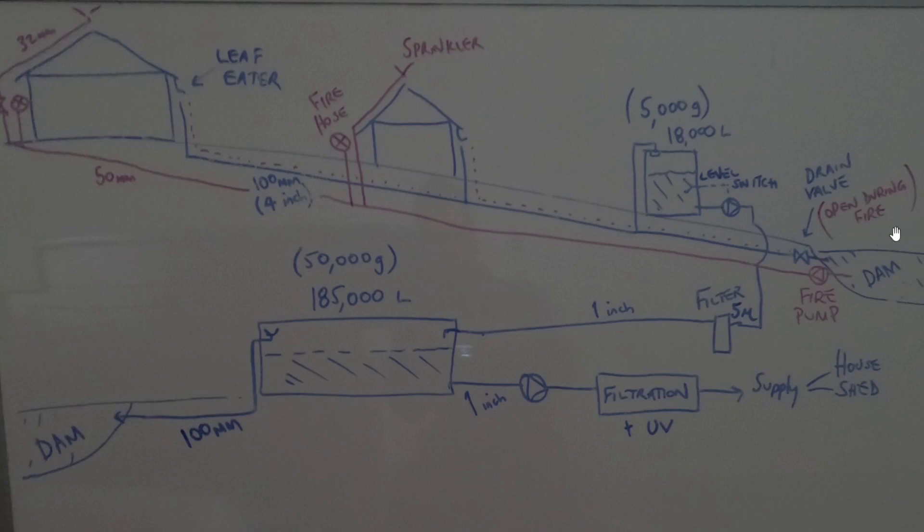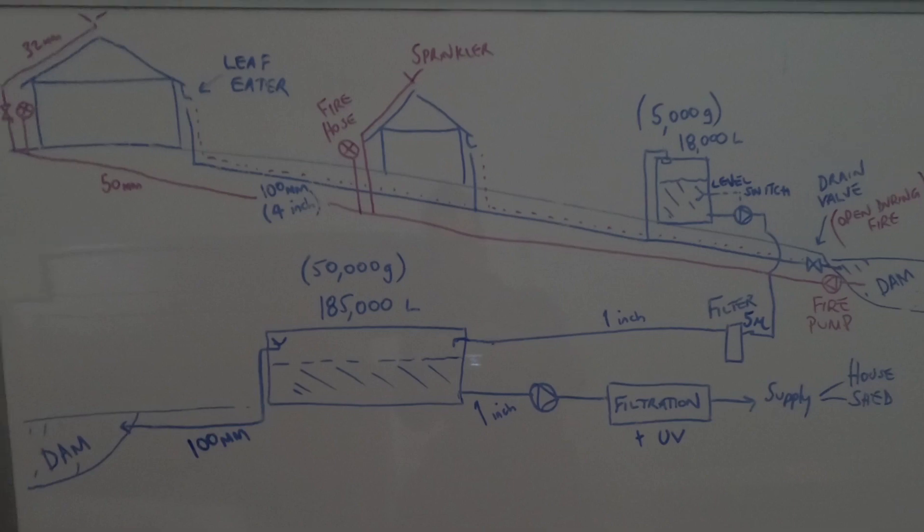It will simply circulate water from my dam to my buildings through the gutter system and back again. And once the fire's over I clean the pipe out and simply close the valve and I can collect rainwater again.